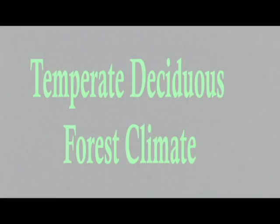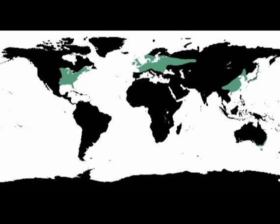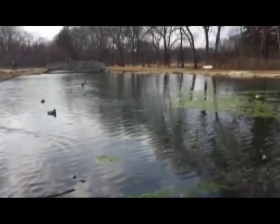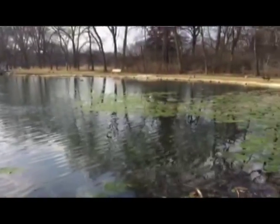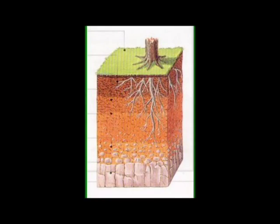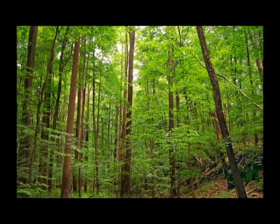Temperate deciduous forest climate. The locations of the temperate forest are shown here. The average amount of rainfall is 30 to 60 inches a year. The type of soil is very rocky and sandy. The temperature in the summer is 70 degrees Fahrenheit.